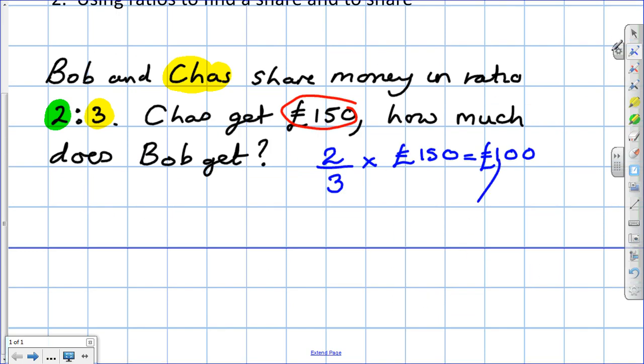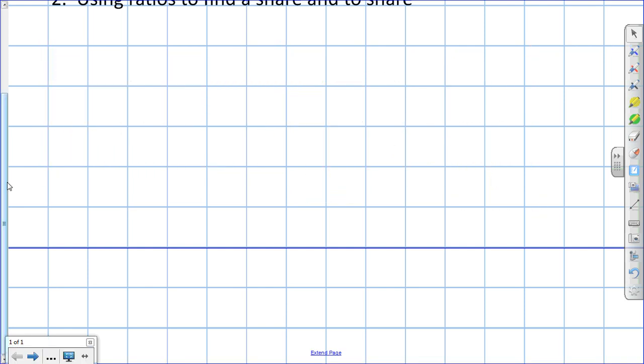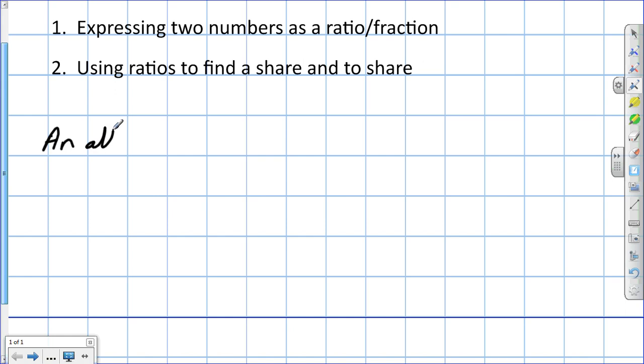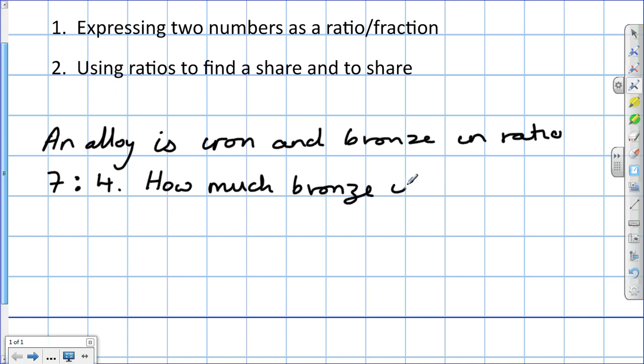Let's look at that again. An alloy is iron and bronze in the ratio of 7 to 4. How much bronze is mixed with 140 grams of iron?